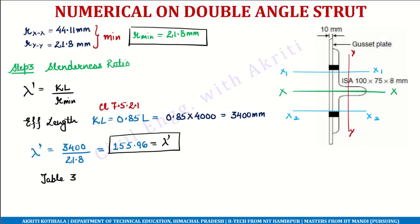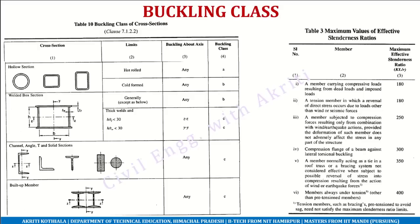We check Table 3 of IS 800-2007: for a member carrying compressive load from dead loads and imposed loads, the maximum effective slenderness ratio is 180. Our value of 155.96 is less than 180, so the section is safe with respect to slenderness ratio.